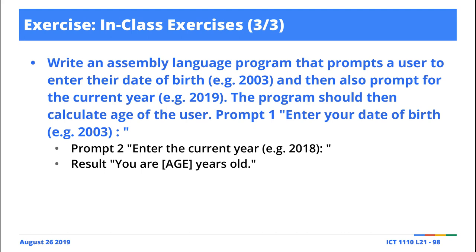When prompting the user, you're writing text like 'enter your date of birth', so you need system call code 4 to print a string. And because you're printing the age — an integer — you use system call code 1. So you're actually making use of syscall codes 1, 4, and 5 here. Just stitch up your program using those.